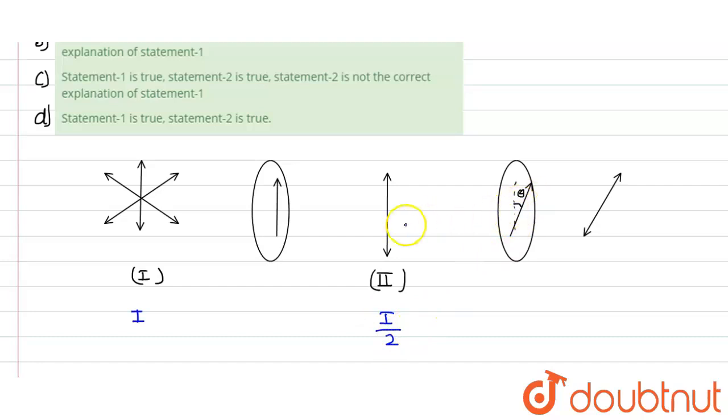Now, correspondingly, when we have tilted this electric field vector in a direction theta with the original polarized light, the new intensity here would be equal to I divided by 2 cos square theta, where theta is the angle through which we rotate.